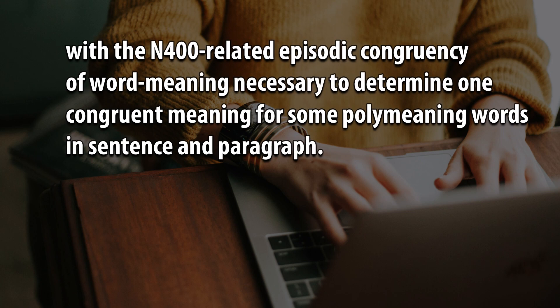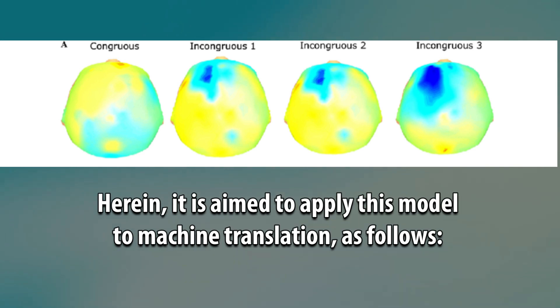With the N-400 related episodic congruency of word meaning necessary to determine one congruent meaning for some polymeaning words in sentence and paragraph, herein it is aimed to apply this model to machine translation as follows.